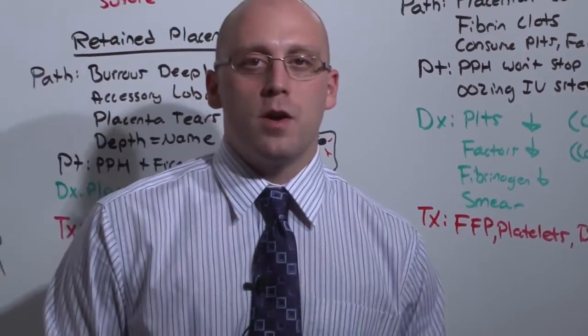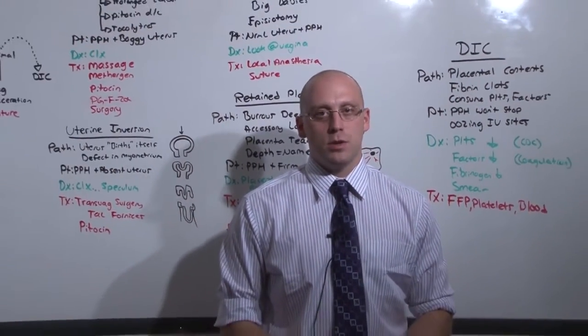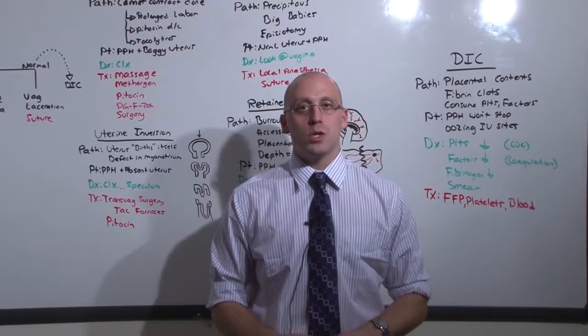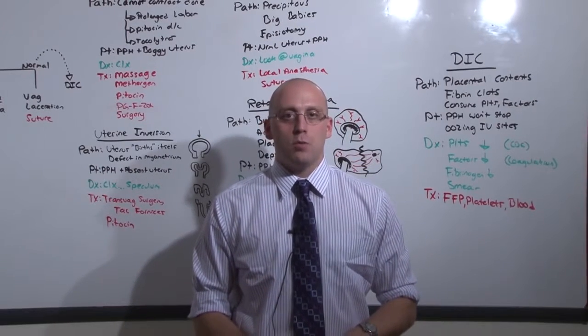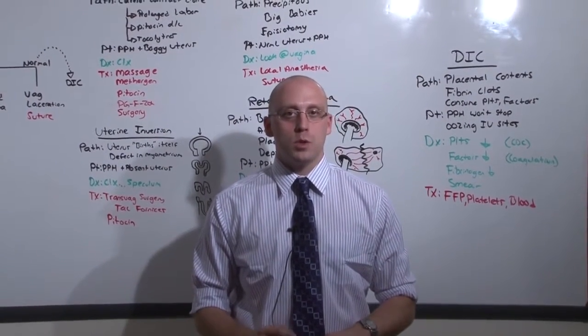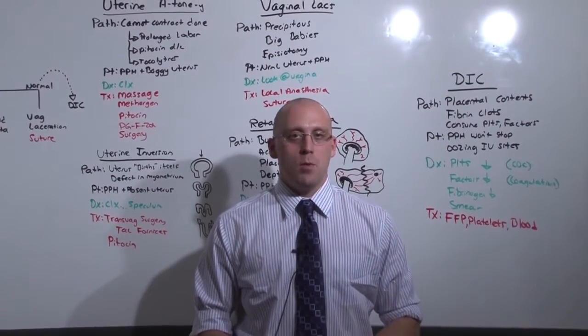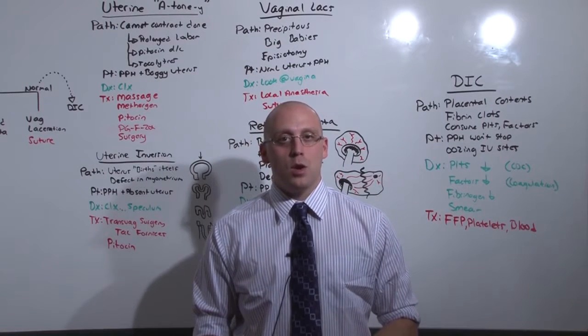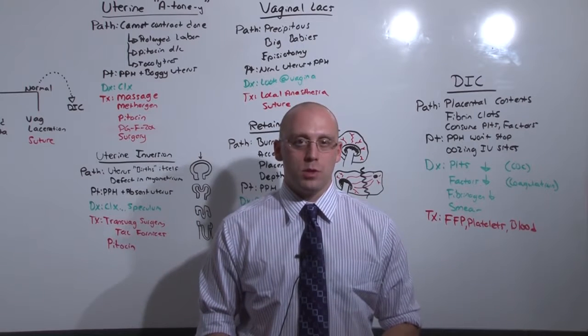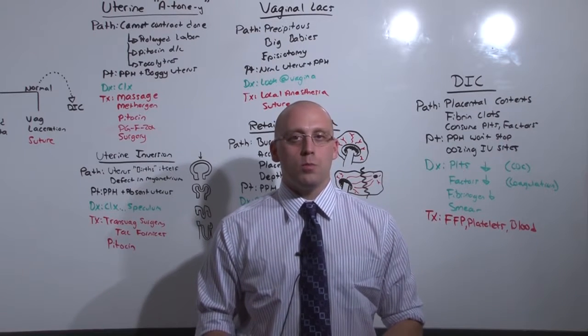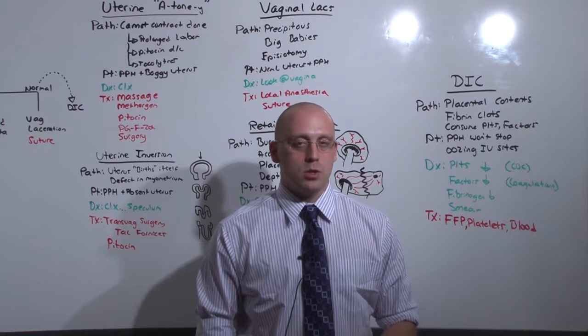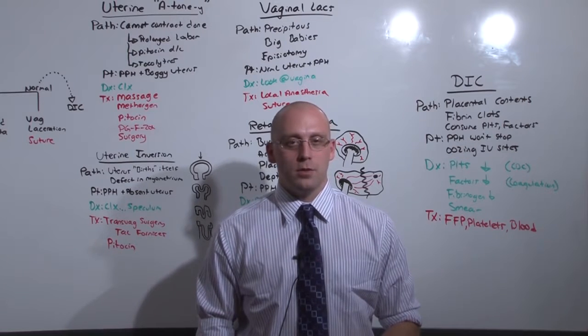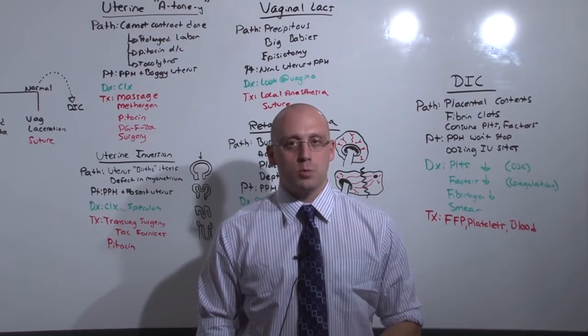So postpartum hemorrhage is defined as a vaginal bleed of 500 cc's of blood or a c-section bleed of more than 1,000. Once you have diagnosed postpartum hemorrhage, your goal is to stop the bleeding. Most of that can be achieved with simple visual inspection and palpation of the uterus. Most of the causes of postpartum hemorrhage are amenable to surgery only, save atony, where you can give them a medication to help contract down the uterus. All the while, be concerned about disseminated intravascular coagulation, especially if you cannot find the source of bleeding or all your attempts to reverse the bleeding have failed. That is postoperative complication, postpartum hemorrhage.